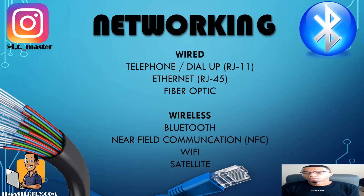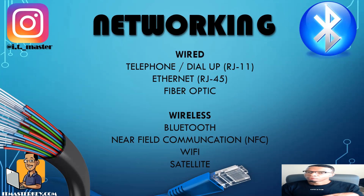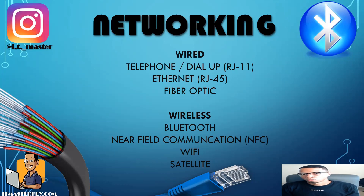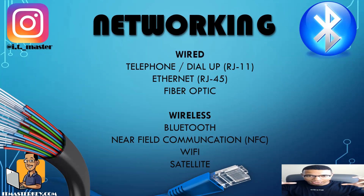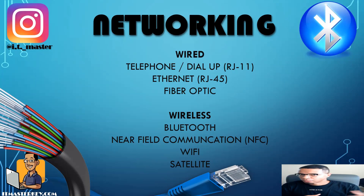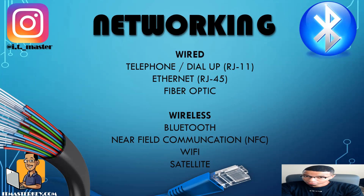We already talked about Bluetooth and NFC, so let's talk about Wi-Fi. With Wi-Fi, you've got access points — it's just a wireless network. If you want to walk around your house, have your laptop on your back porch, or front porch, you can have internet access wherever you are. If you're in a coffee shop or at McDonald's, you can have that access through Wi-Fi.